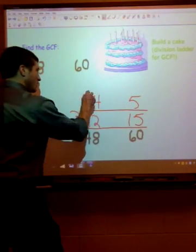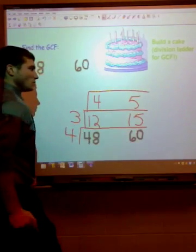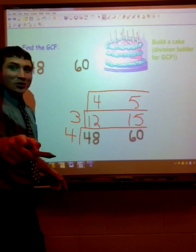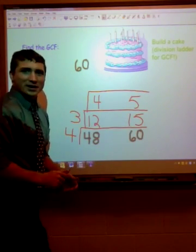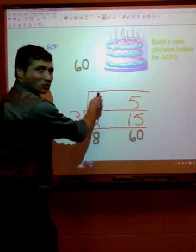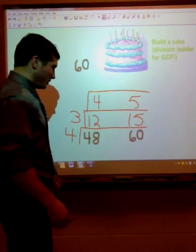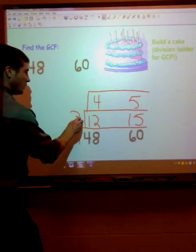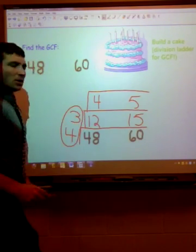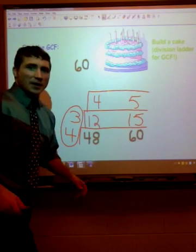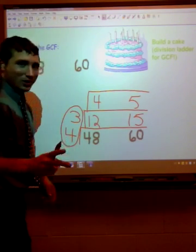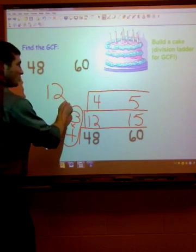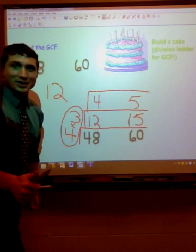Let's add another layer to the cake. Do these numbers, 4 and 5, have any common factors? If you said no, you're right — because 5 is a prime number and since it's larger than 4, there's no way it would be a factor of 4. So we have two common factors: 3 and 4. To find the greatest common factor, we simply multiply these two — 3 times 4 is 12. And that is your greatest common factor.